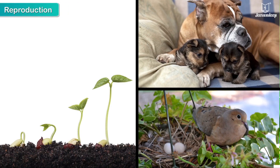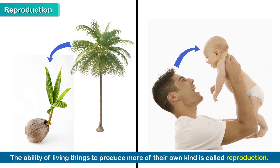Reproduction. Living things, plants and animals, produce more of their own kind through reproduction.